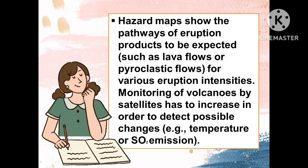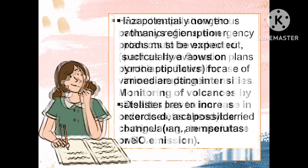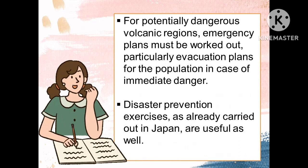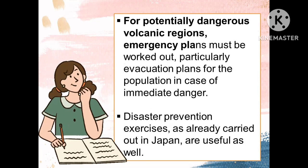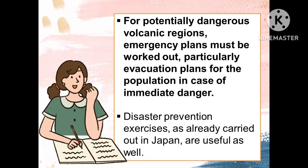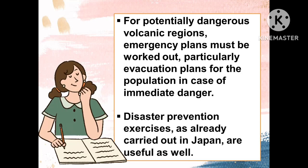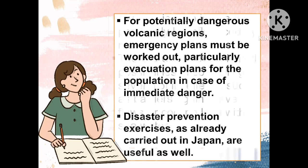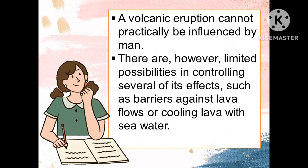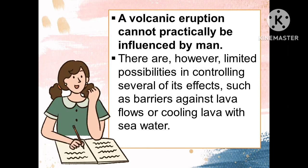Monitoring of volcanoes by satellites has to increase in order to detect possible changes, for example, the temperature or the SO2 emission. For potentially dangerous volcanic regions, emergency plans must be worked out, particularly evacuation plans for the population in case of immediate danger. Disaster prevention exercises, as already carried out in Japan, are useful as well. A volcanic eruption cannot practically be influenced by men.